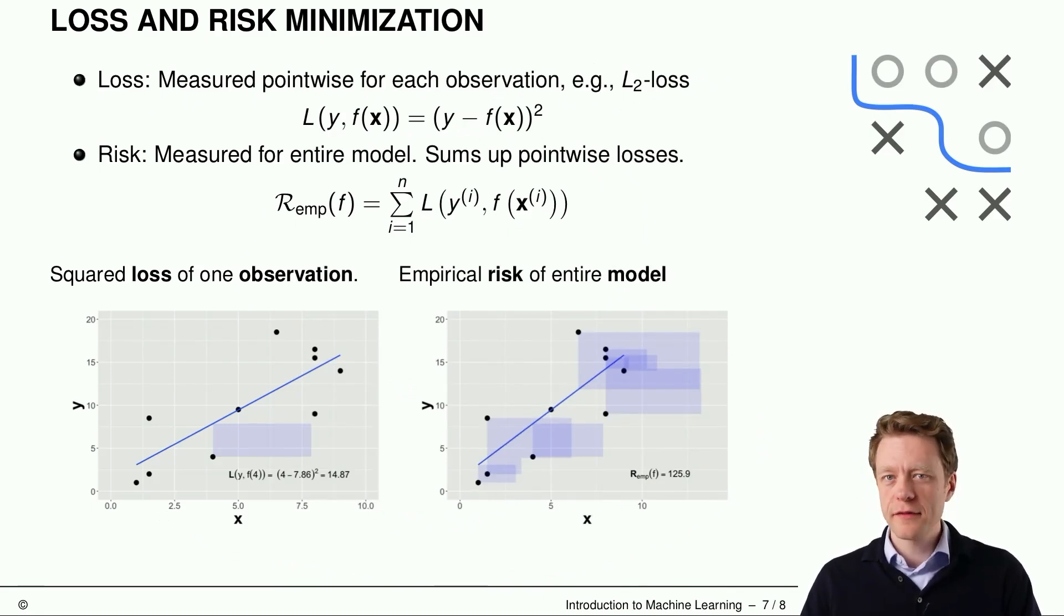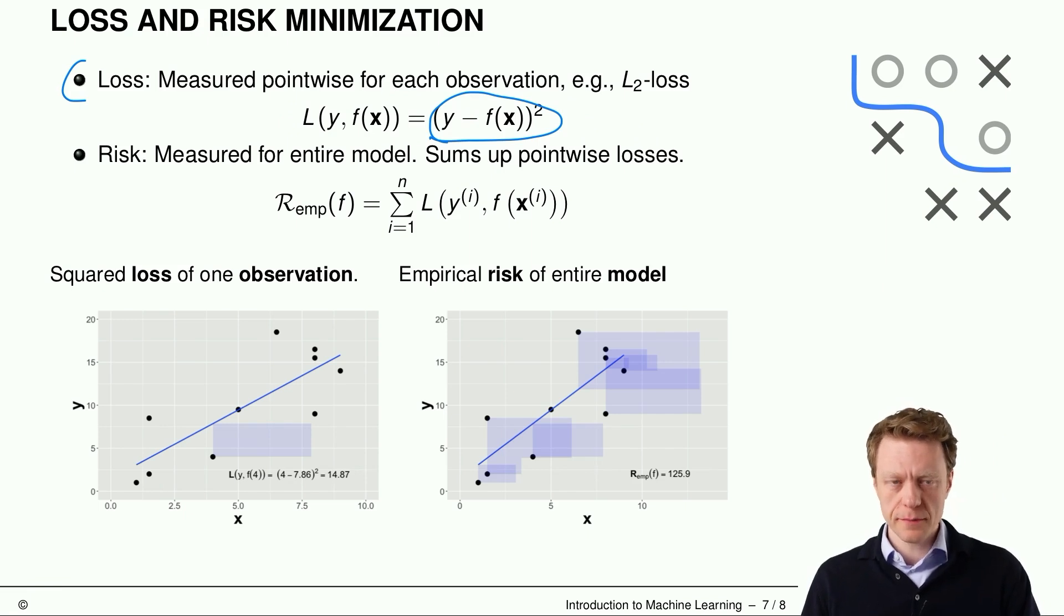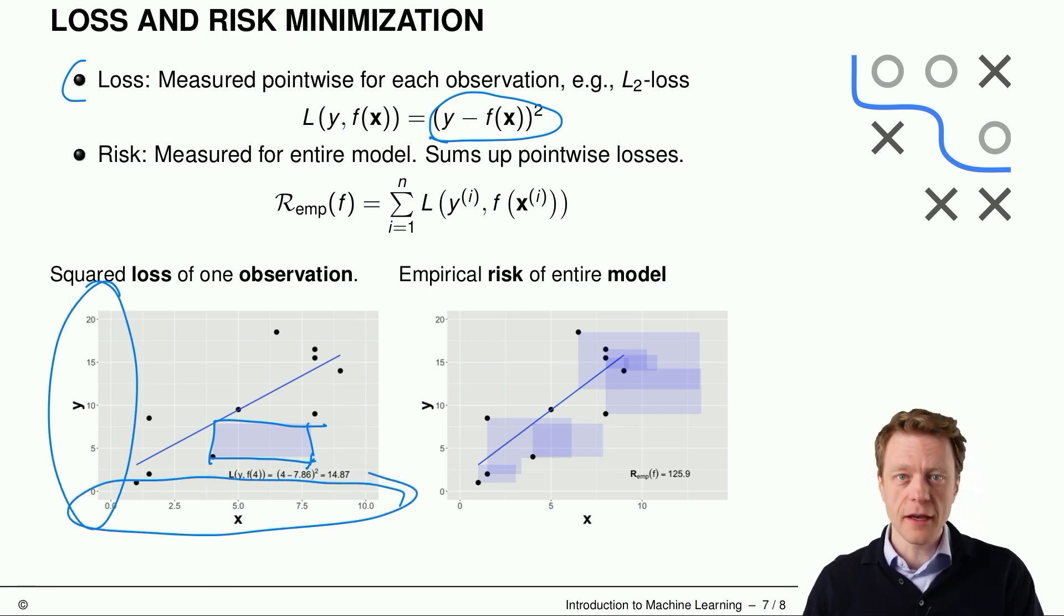Now one question would be how does the learner pick the best element of the hypothesis space, of course. And for this, the concepts of loss and risk are very helpful. The loss measures point-wise, is a point-wise measure and tries to quantify how far away the prediction f is from the true target y. One example could be the L2 loss, which just takes the difference of the true target and the predicted target and squares this difference. So in the example below, we have this blue square here. So it's not a square in this figure, but if you look at the axis, they are on different scale. If you would rescale those, it's actually a square. So this is the loss for this observation here. And we can, of course, compute this loss for all the observations.